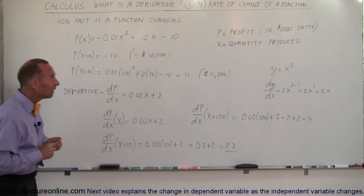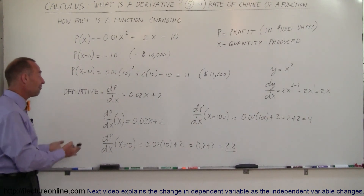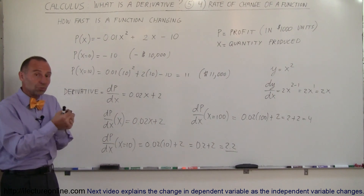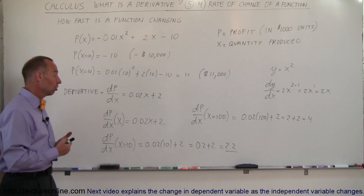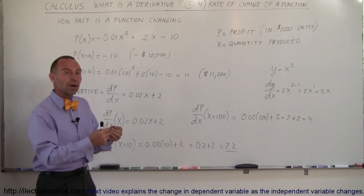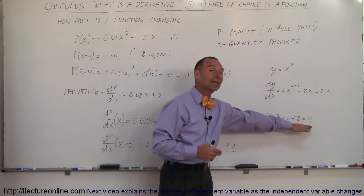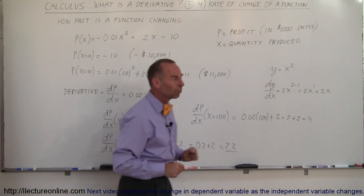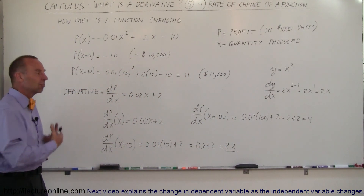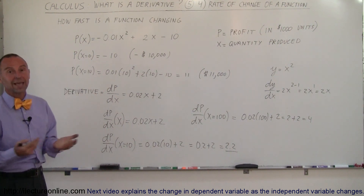So the derivative is a tool that tells you how fast the function is changing — in this case, how fast the profit is changing when the independent variable, the number of units produced, changes. If I produce 10 units, I make $2,200 more profit per additional unit built. If I build 100 units, each additional unit yields $4,000 in profit. The derivative simply represents how fast the function changes as the independent variable changes.